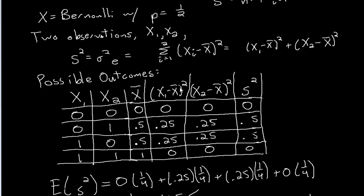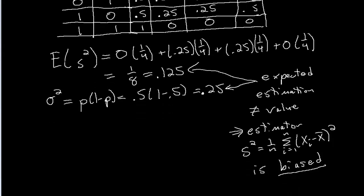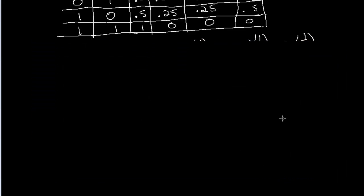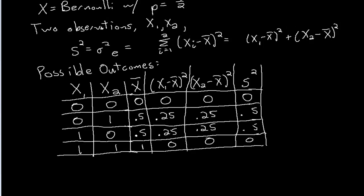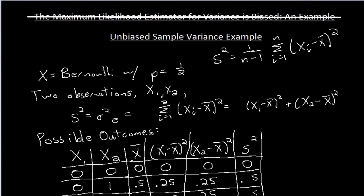I'm adding up (X1 minus X-bar) squared and (X2 minus X-bar) squared. Let me redo this section — I'll erase what I have here. I'm going to compute the expectation of the new S squared. From now on in the course, when we talk about S squared, we're talking about the sample variance where we divide by N minus 1.